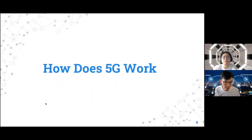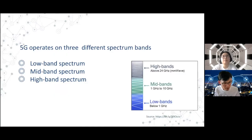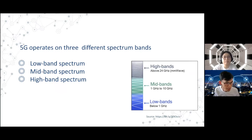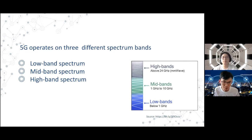5G achieves its unparalleled latency by operating across three spectrum bands: low, mid, and high. The low band spectrum, also described as sub-1 GHz spectrum, is the primary band used by carriers in the US for LTE. Its bandwidth is nearly depleted. While low band offers great coverage area and wall penetration, the big drawback is that peak data speed is kept around 100 Mbps.